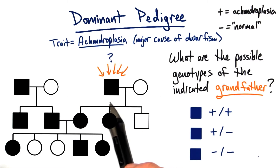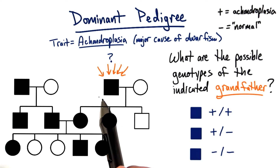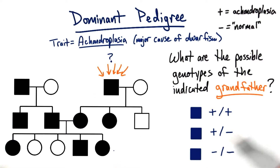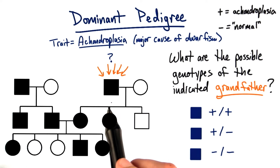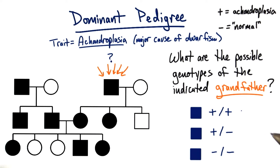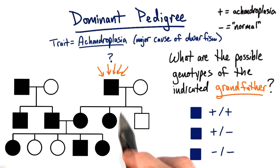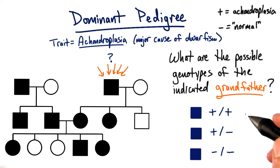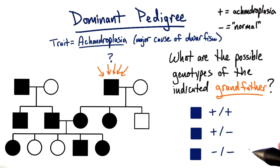Take a look at this particular grandfather in this pedigree of the dominant trait achondroplasia. What are the possible genotypes of this indicated grandfather? This question is not as simple as it seems, so take a hard look at the pedigree and give it your best shot — check any and all boxes that you think apply.